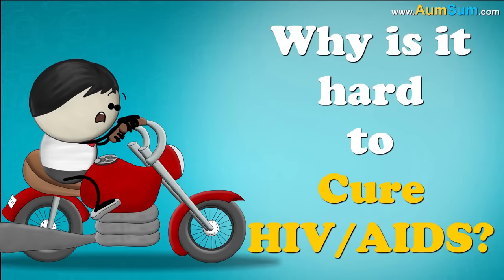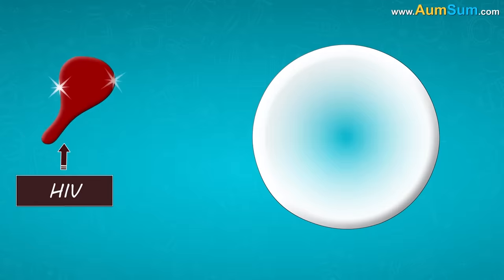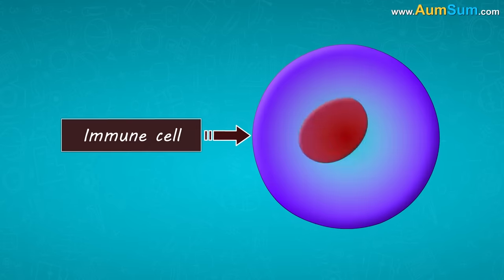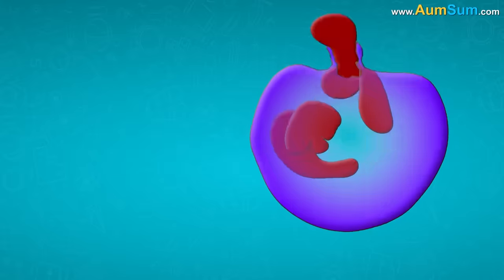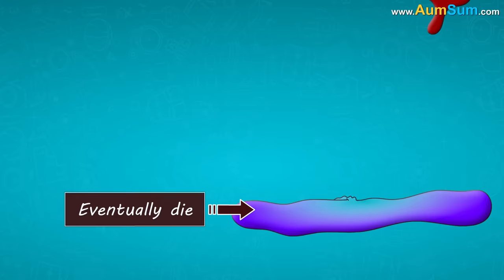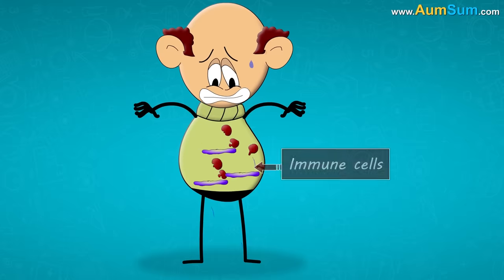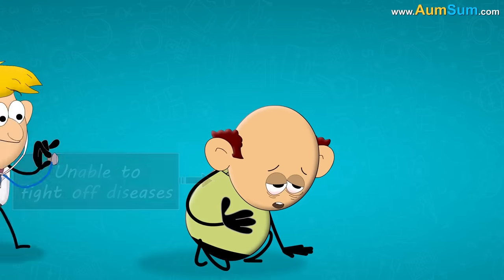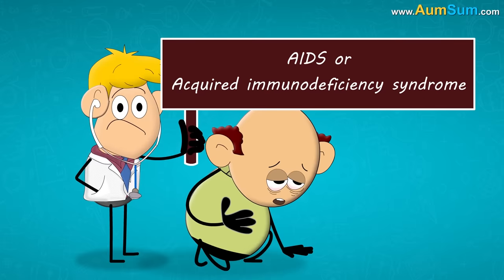Why is it hard to cure HIV, AIDS? HIV, or Human Immunodeficiency Virus, infects the cells of the immune system, causing them to produce more copies of the virus and then eventually die. When too many immune cells of your body die and our immune system is unable to fight off diseases, then we are said to have AIDS, or Acquired Immunodeficiency Syndrome.